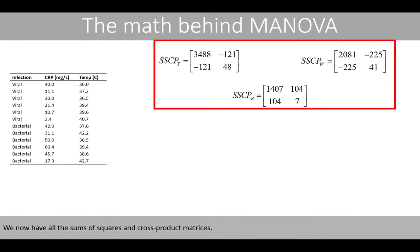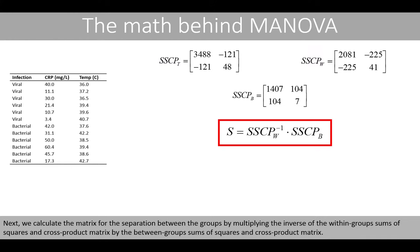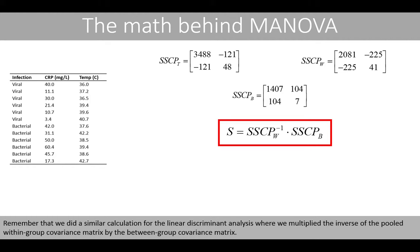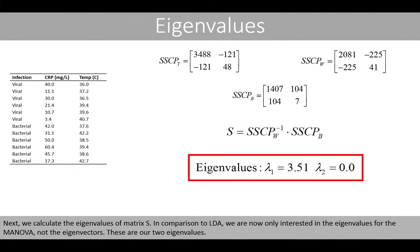Now that we have all the sums of squares and cross-product matrices, we calculate the matrix S for the separation between the groups by multiplying the inverse of the within-groups sums of squares and cross-product matrix by the between-groups sums of squares and cross-product matrix. This is similar to the calculation for LDA, where we multiply the inverse of the pooled within-group covariance matrix by the between-group covariance matrix. Next, we calculate the eigenvalues of matrix S. In comparison to LDA, we are only interested in the eigenvalues for MANOVA, not the eigenvectors.